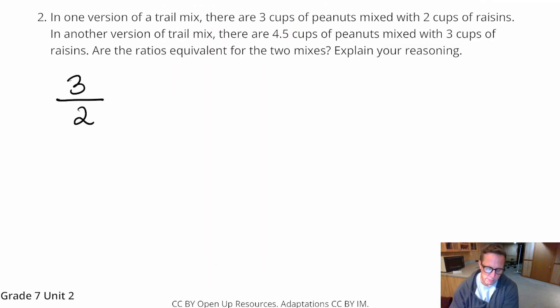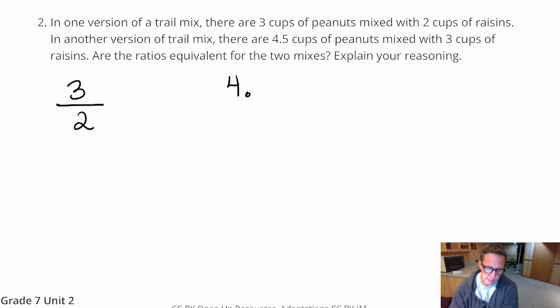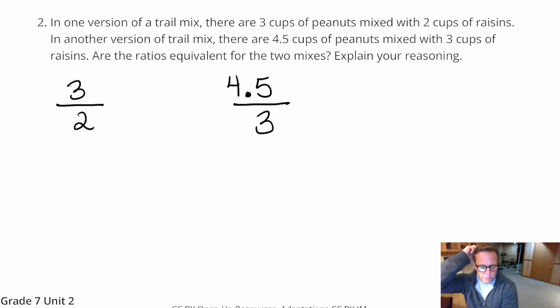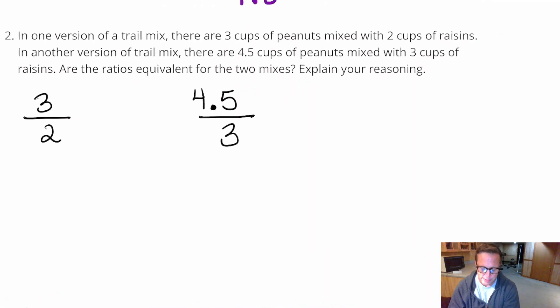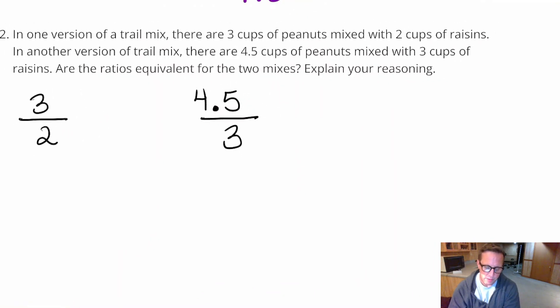Now we've got, the other one, we've got four and a half. We've got four and a half peanuts, cups of peanuts, over three cups of raisins. Now I'm just looking at that, you're like, no way. It doesn't look right. But that's because you've got a decimal in there, that's ugly. You don't really want to have decimals in fractions. That is usually a bad sight. Four and a half, that's a mixed number. So I can think of that as four and a half, like that.